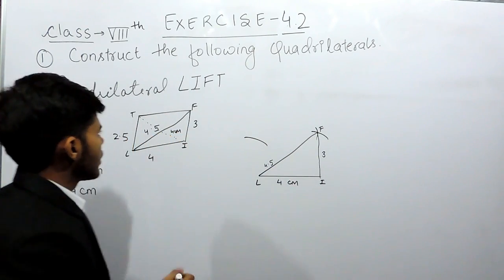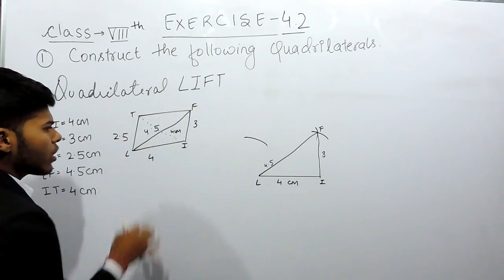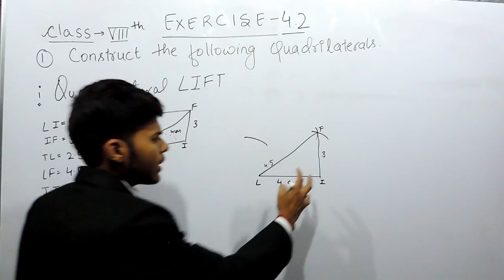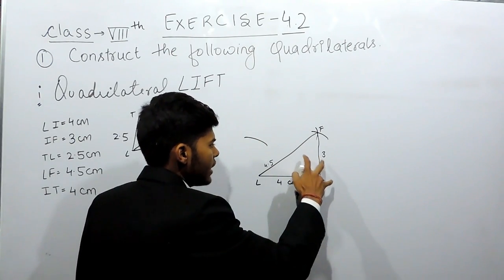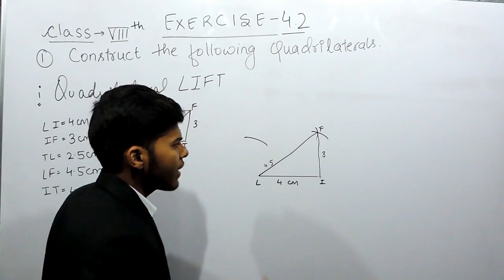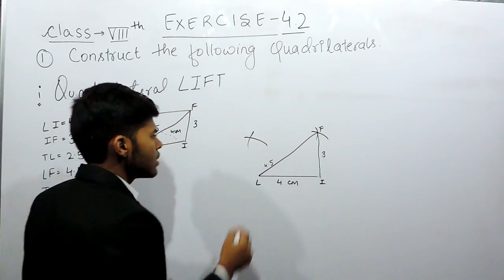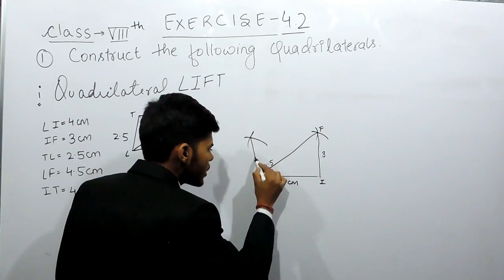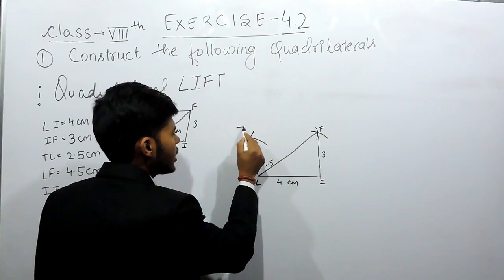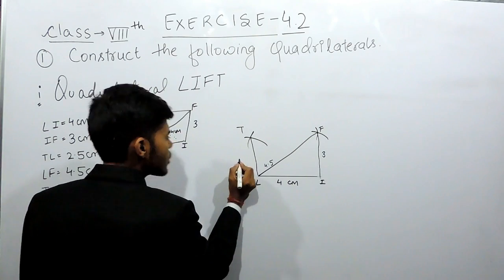Now TF is not given to us. We will keep the compass at point I and cut an arc of 4 cm. It will join this point. This point will be point T. This is 2.5 cm.